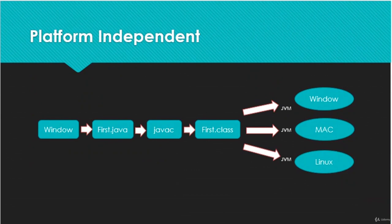The platform independence architecture shows: we write first.java on Windows, compile it with javac into bytecode (intermediate program), and with the help of JVM, we can run that bytecode on Windows, Mac, or Linux platforms — if JVM is present there.